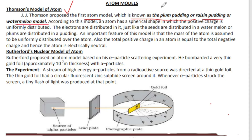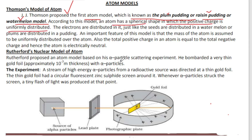If we are talking about it, we are talking about the plum pudding model, or raisin pudding, or watermelon model. J.J. Thomson proposed this model. According to this model, an atom has a spherical shape in which the positive charge is uniformly distributed.